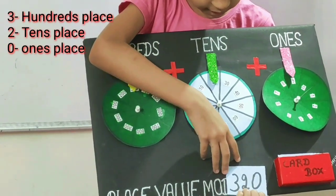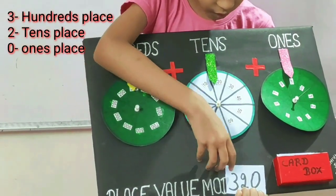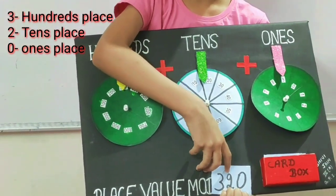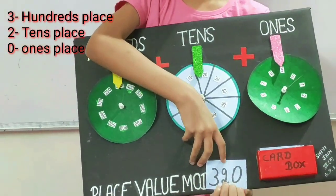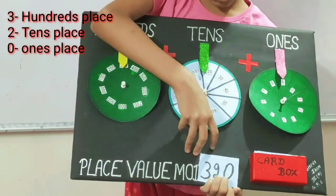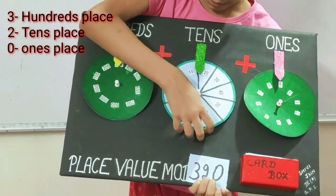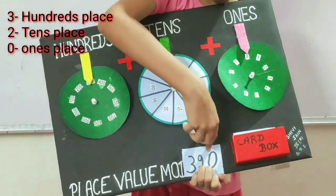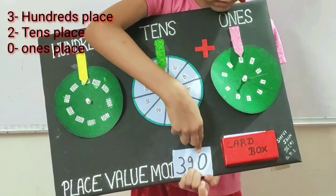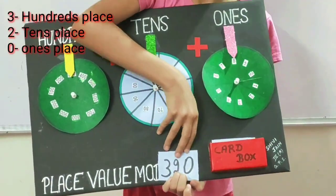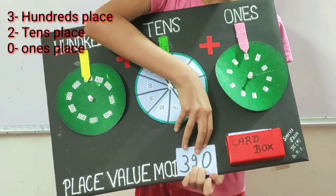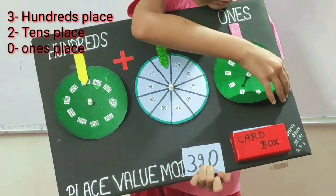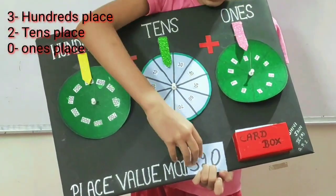There is 2 on the 10th place, so we put here 20, because 2 means 20. And here 0 on the 1st place, so we put here 0.